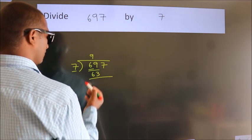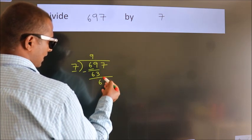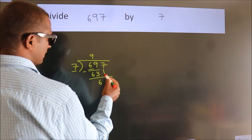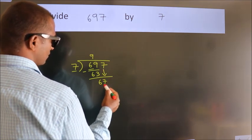Now we should subtract. We get 6. After this, bring down the beside number, so 7 down. So 67.